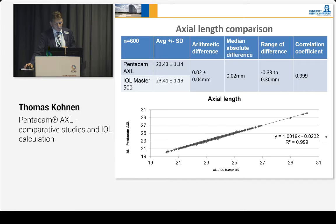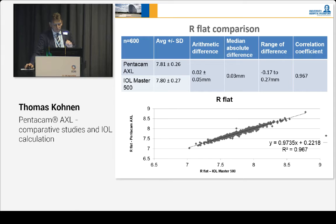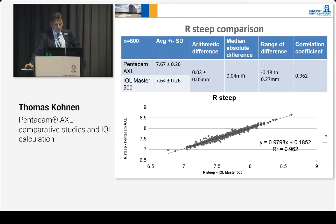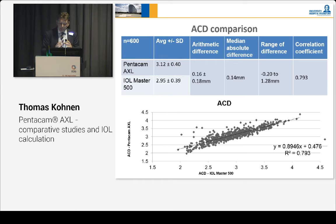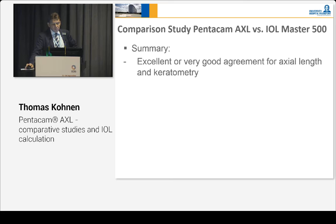As you can see here, the average with standard deviation, arithmetic differences, mean absolute differences, range of differences, and the correlation coefficient showed a very good correlation — almost 100%, as you can see in this graph. Axial length comparison and the corneal flat and steep curvature measurements also show excellent correlation. The ACD comparison shows slightly different results, but still a correlation coefficient of 0.79, so almost 0.8.